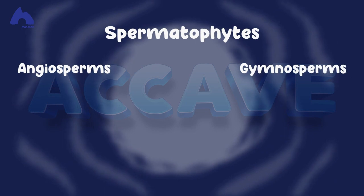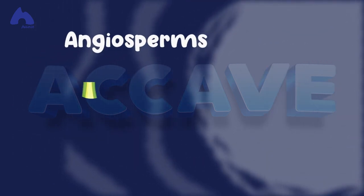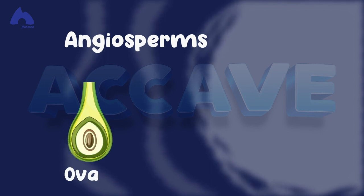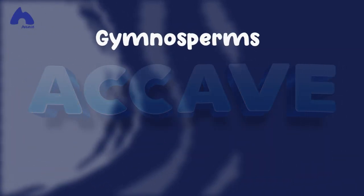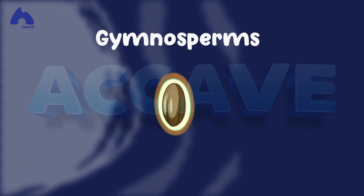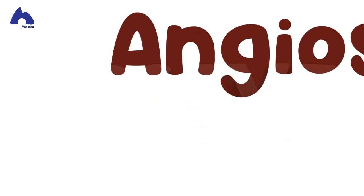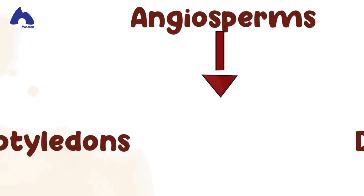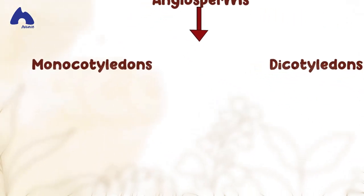Spermatophytes can also be further grouped into angiosperms and gymnosperms. The angiosperms are those that have their seeds covered or enclosed in something called the ovary, which is the part of a plant that we all know as the fruit. The gymnosperms are those that don't have their seeds enclosed in an ovary.